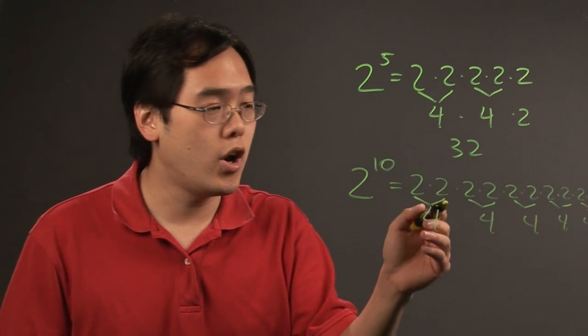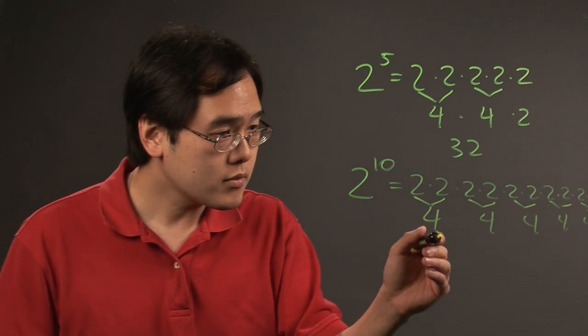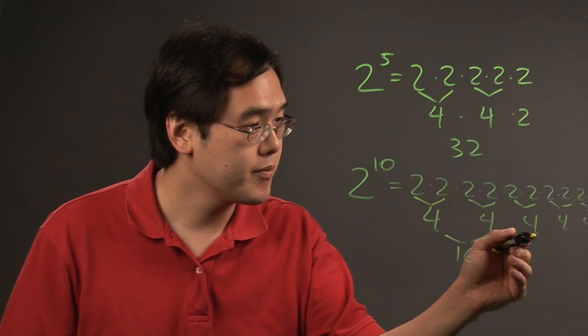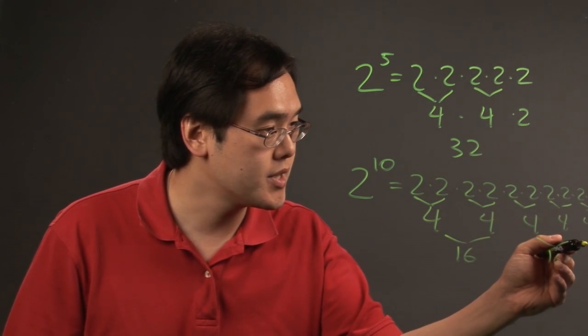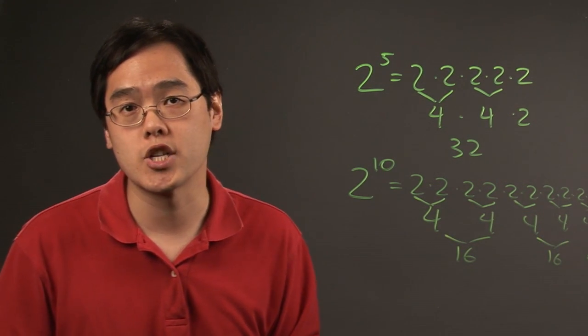Now, what you can do is you can multiply all these numbers together. You could even do 16s if you like. 16 times 16 times 4, and then just do the multiplication from there.